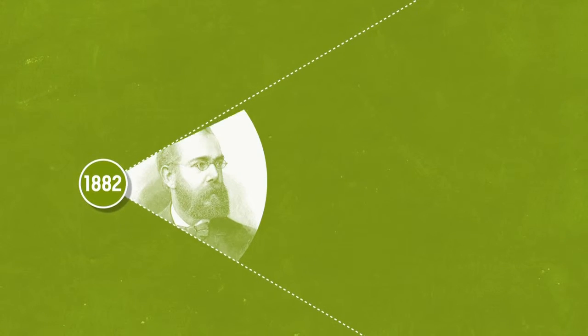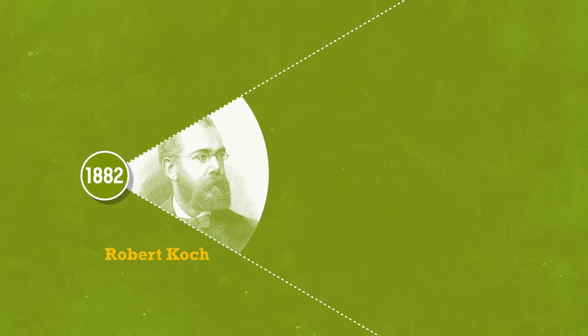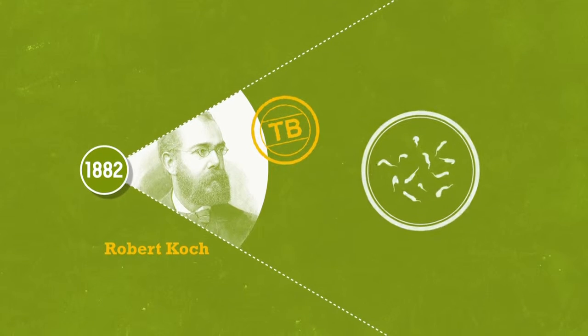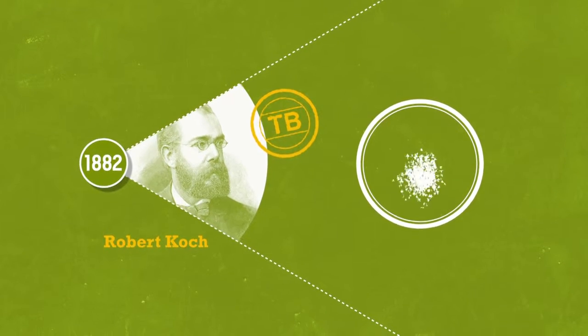In 1882, German physician Robert Koch discovered the tuberculosis bacillus that bears his name. From then on, it was known that Koch's bacillus is spread through the air.